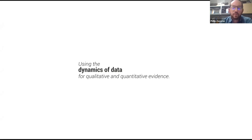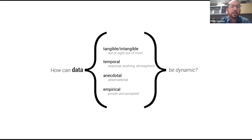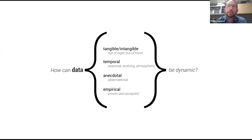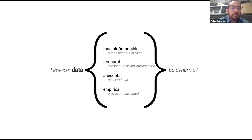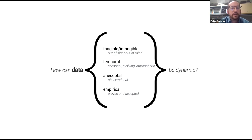Here we start to look at the dynamics of data — what kind of data can we really start to explore? One area I go more in-depth on is this idea of tangible versus intangible. A lot of times when we think of data that's intangible, it's out of sight, out of mind — we don't readily think about those things. As already shown, the temporal changing of data — whether seasonal, evolving, or atmospheric — it can even be anecdotal. It doesn't always have to be completely quantitative or big data.